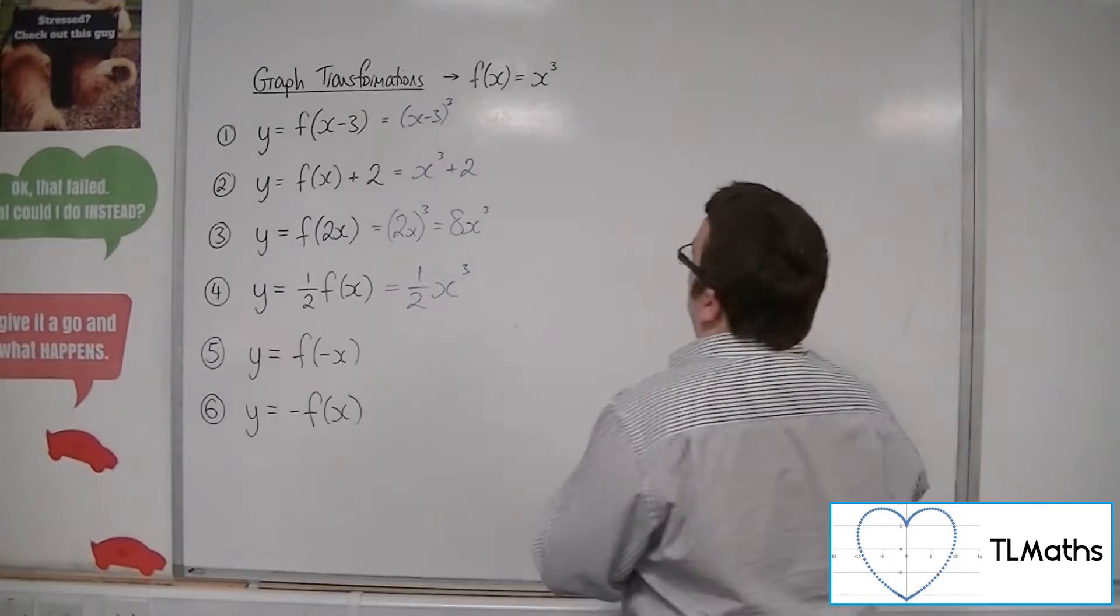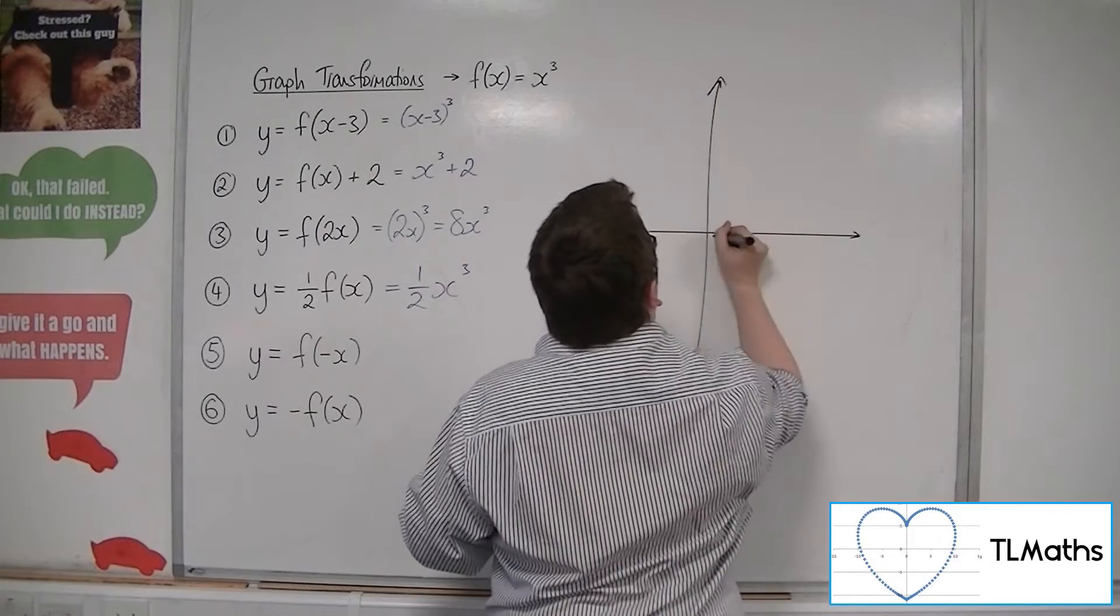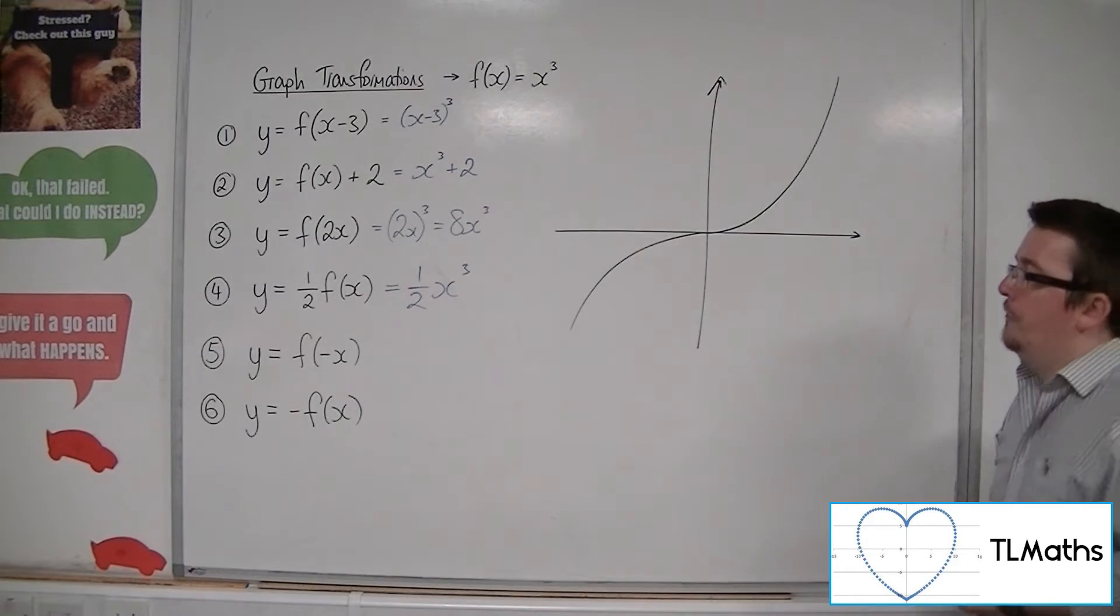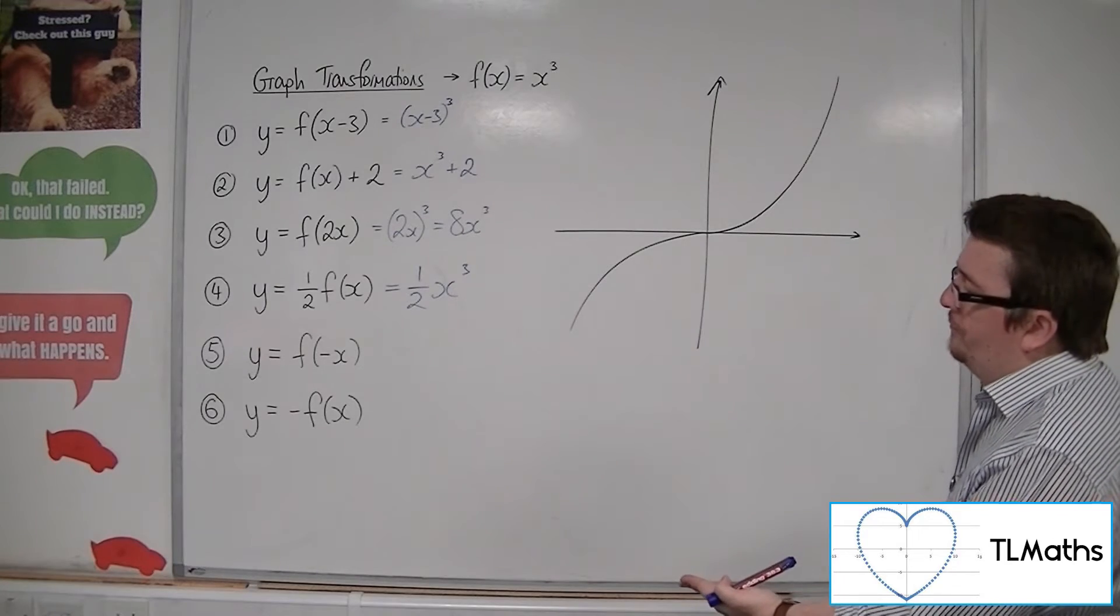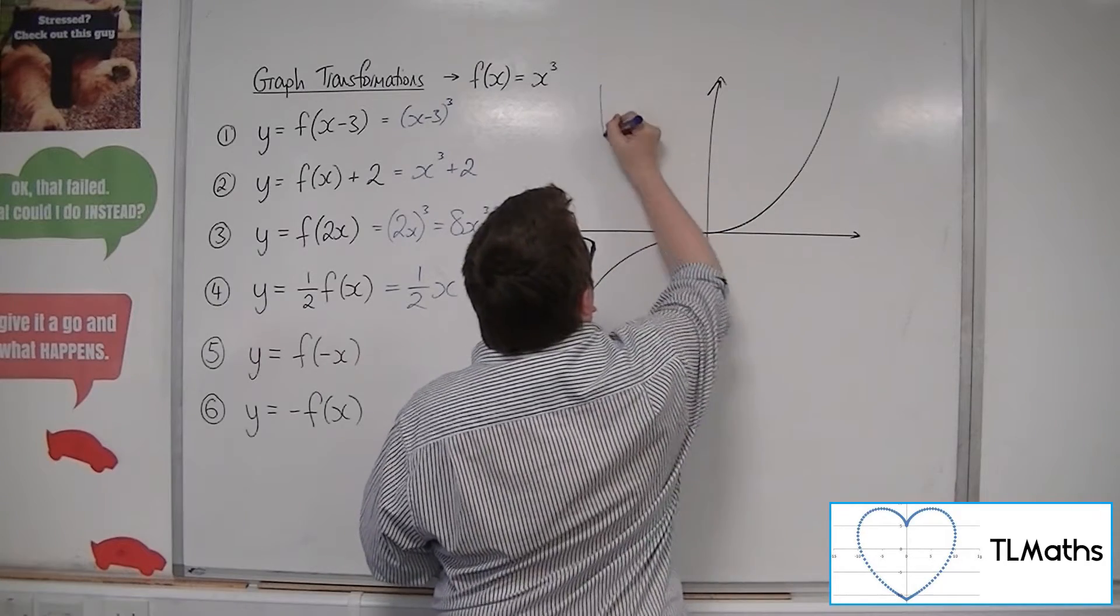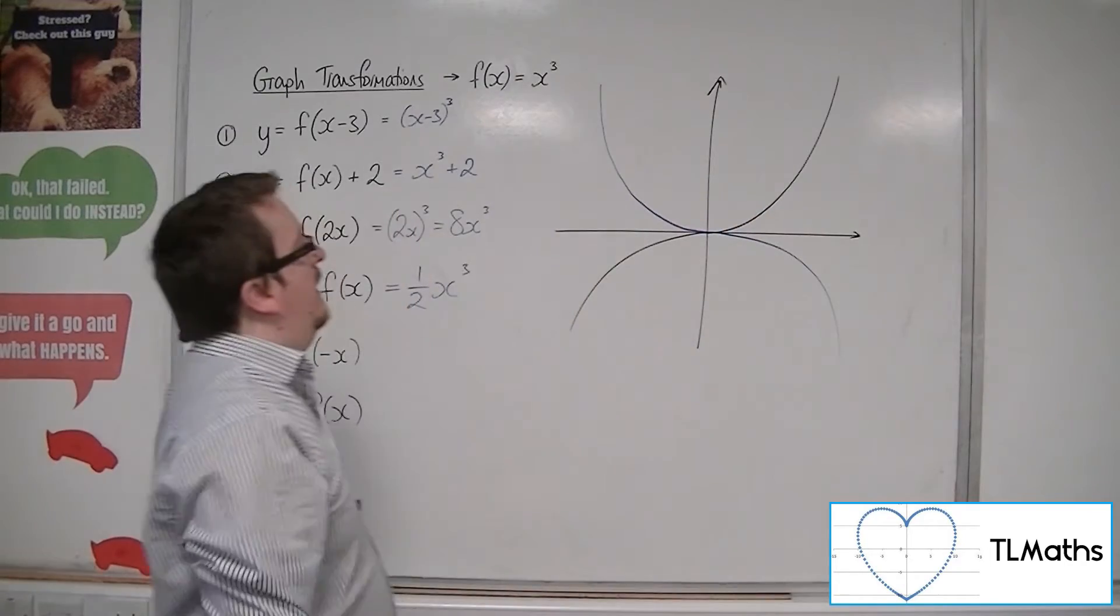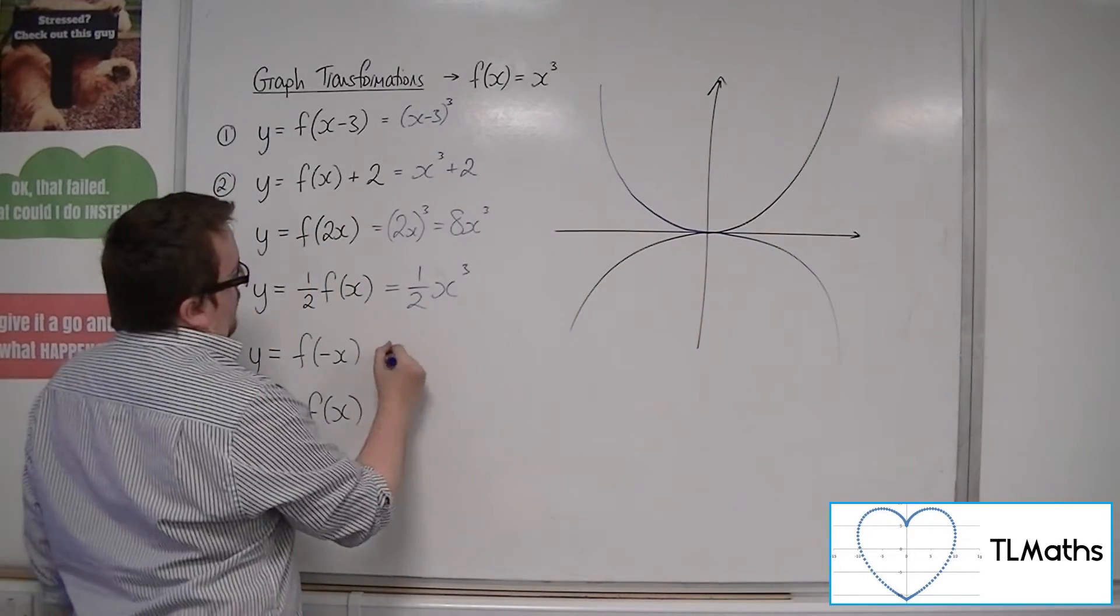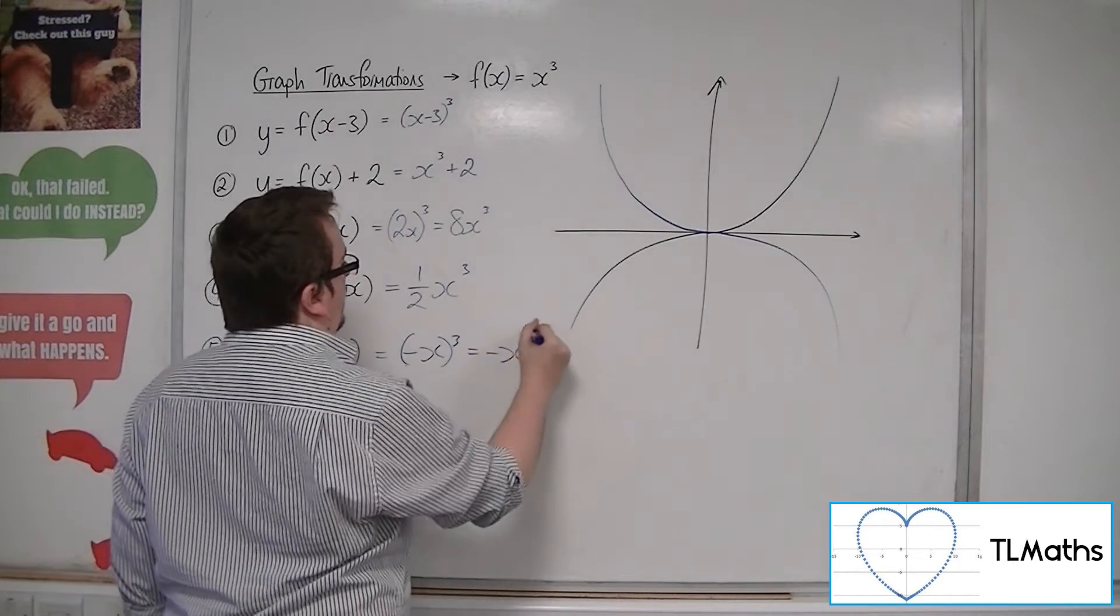Now, f of minus x. f of minus x is a reflection in the y-axis. So our curve would look something like this. Something like that. So our curve has been reflected like that. And if I replace the x with minus x, I get minus x all cubed, which is minus x cubed.